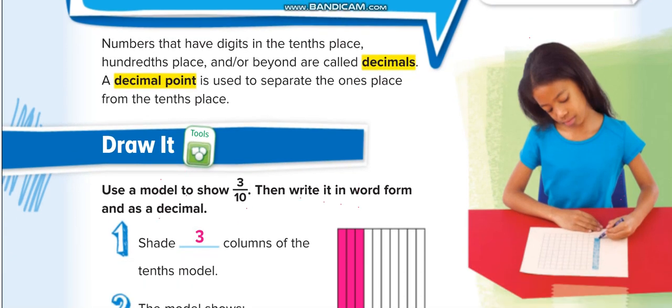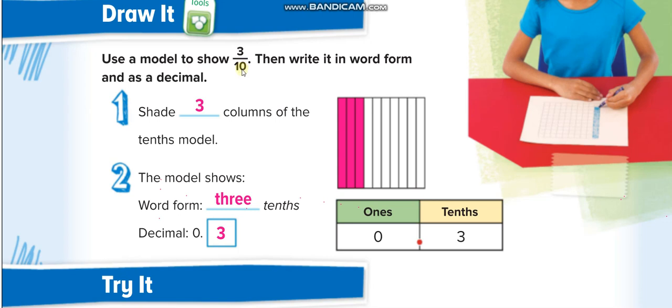Here the first question: use a model to show 3 out of 10, or 3 over 10. Then write it in word form and as a decimal. When we write fractions, it's not a complete number, it's a part of a number. So we divided one whole into 10 parts from the denominator, and out of 10 parts we have 3. So 3 columns of the tenths model shaded. We write it as decimal 0.3, and we read the place value of the last digit: three tenths.